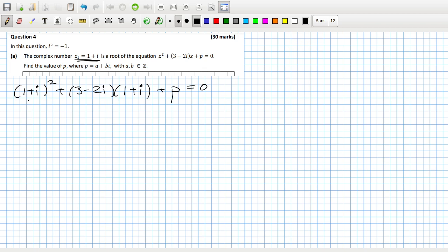So if I square this out, that'll be 1 plus 2i plus i squared plus 3 plus 3i minus 2i minus 2i squared plus p equals zero.